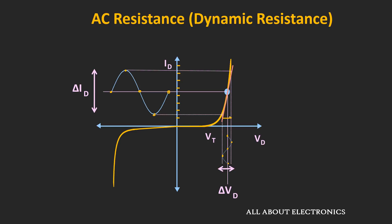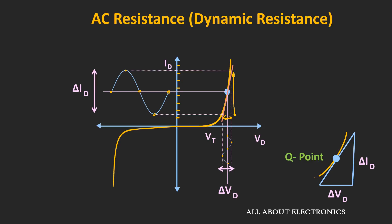Here, this variation is the variation in voltage, while this variation is the variation in current. Zooming into this portion, by drawing the tangent to the Q-point we can find the value of the AC resistance, because the slope of this line gives the resistance for the diode — equal to the change in voltage divided by the change in current.